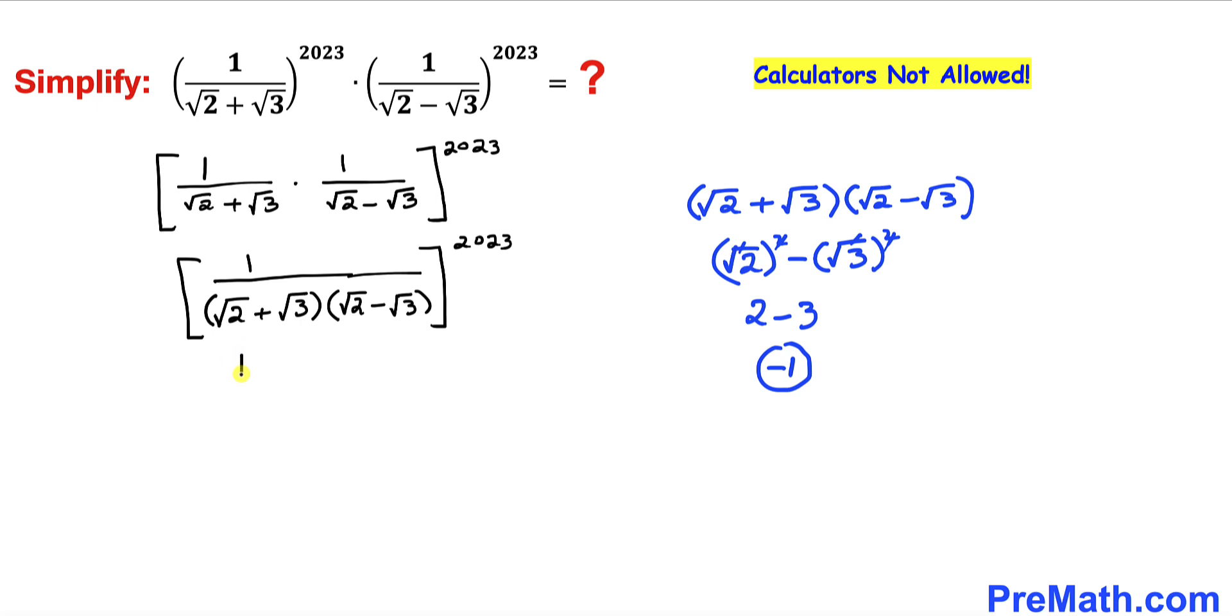So therefore this could be written as 1 divided by negative 1 at the denominator, whole power 2023. Now we know that 1 divided by negative 1 is the same as negative 1. So therefore we can write this as negative 1 power 2023.